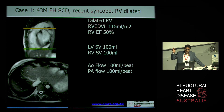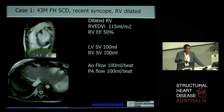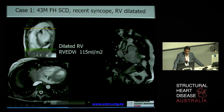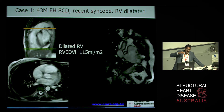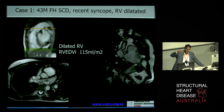The right ventricular end diastolic indexed volume is 115 mils per meter squared. Normally up to about 100 mils per meter squared would be acceptable, so this is probably 10 to 15% above normal — mildly dilated. The function of the right ventricle is normal. But there was a sense from the axial stack that towards the pulmonary artery, just in the right ventricular outflow tract, there was some unusual wall motion.